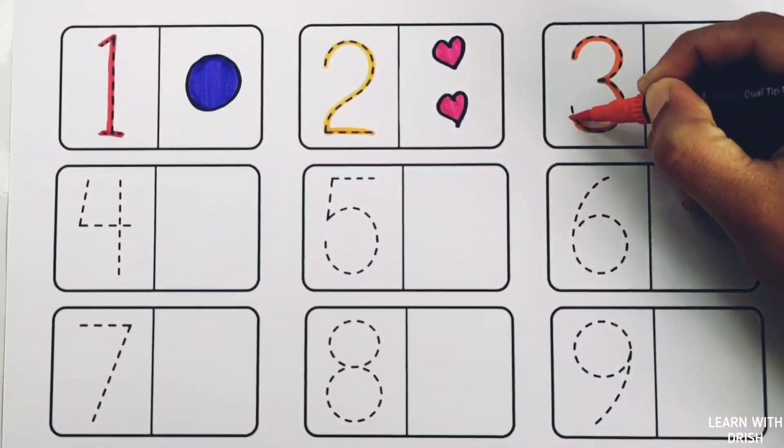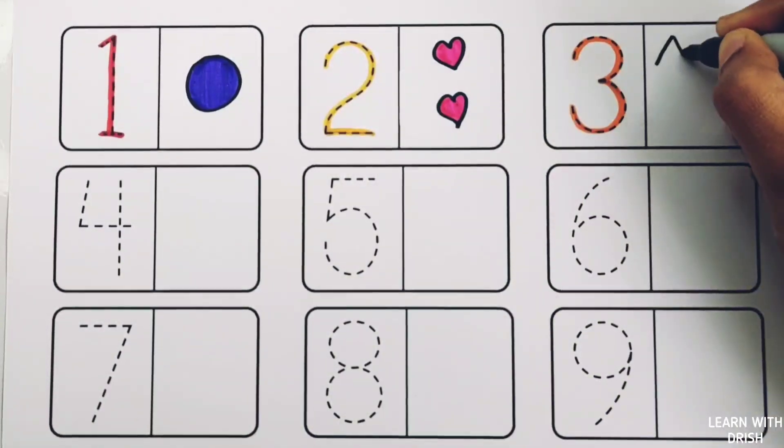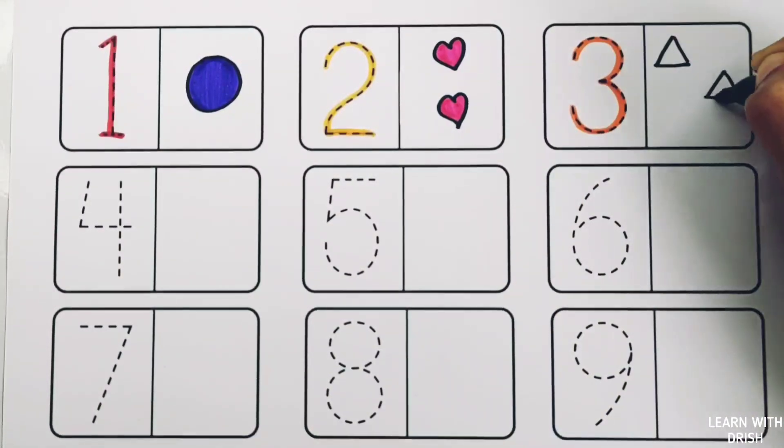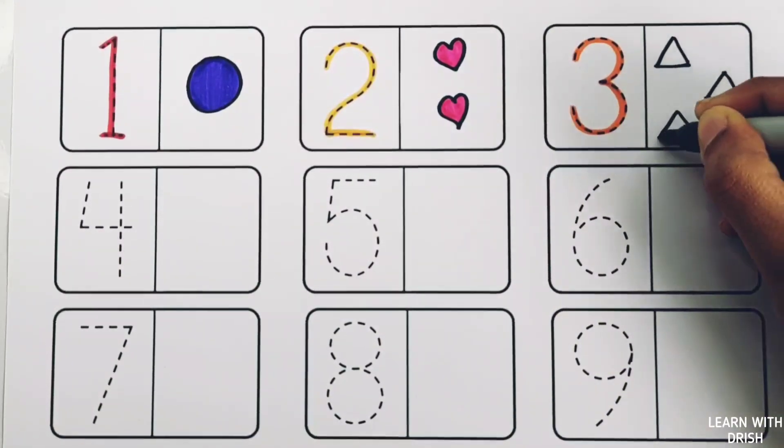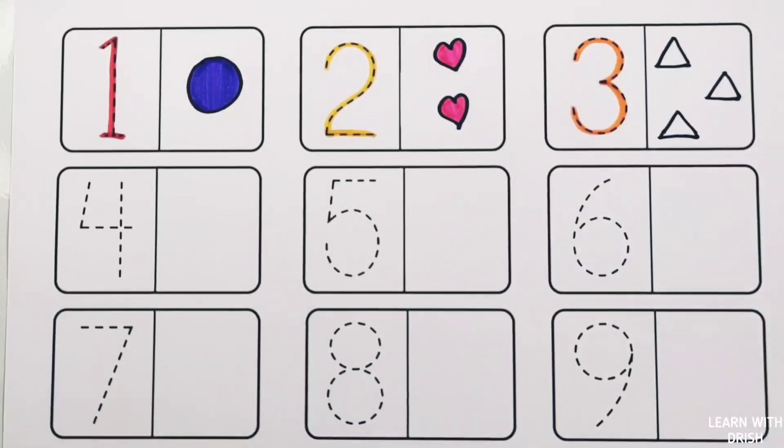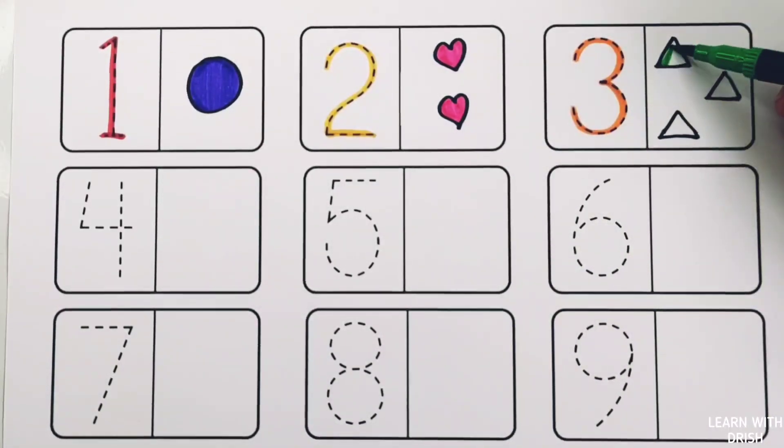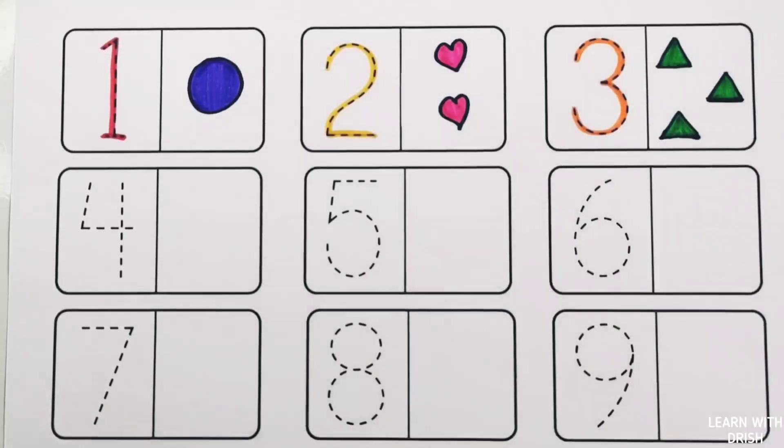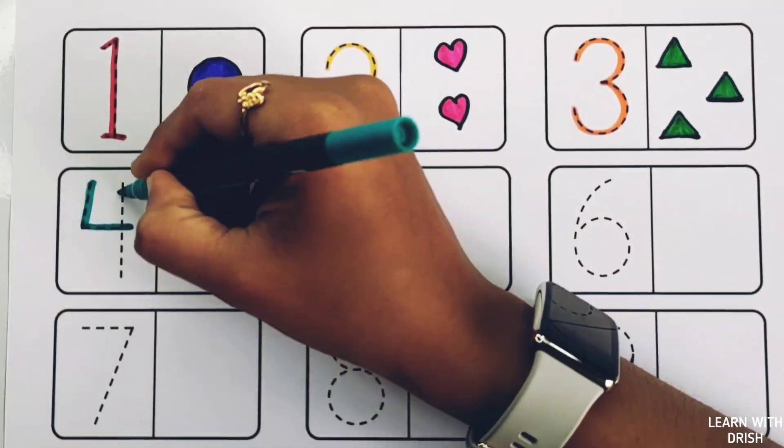Number three. One, two, three. Three triangles, green color. Number four.